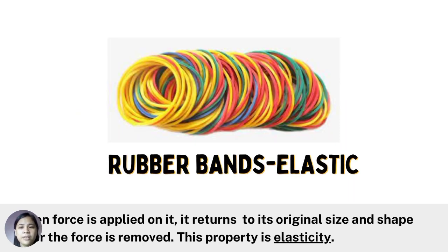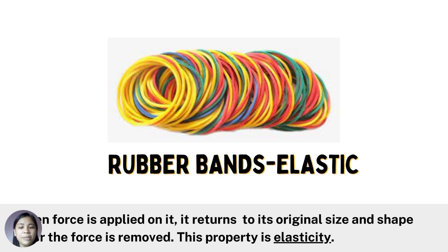Unlike plastic materials, rubber bands are elastic. When force is applied on it, it returns to its original size and shape after the force is removed. This property is elasticity. Rubber is durable, elastic, and can resist heat. This makes rubber an excellent material in making tires for land vehicles.